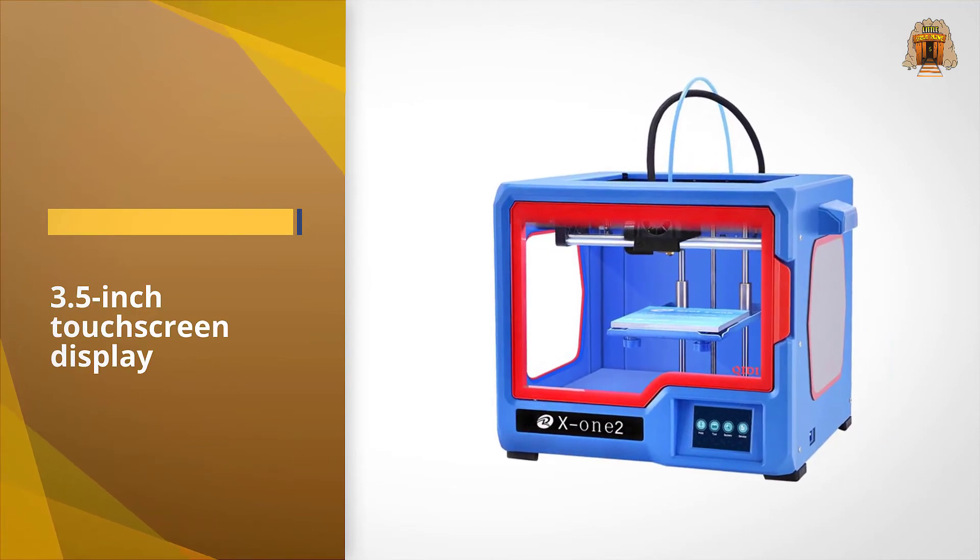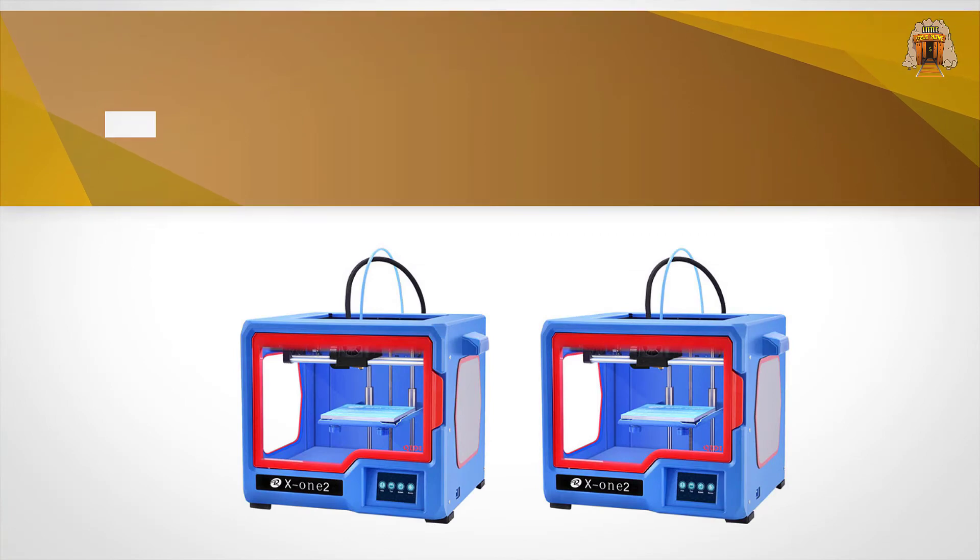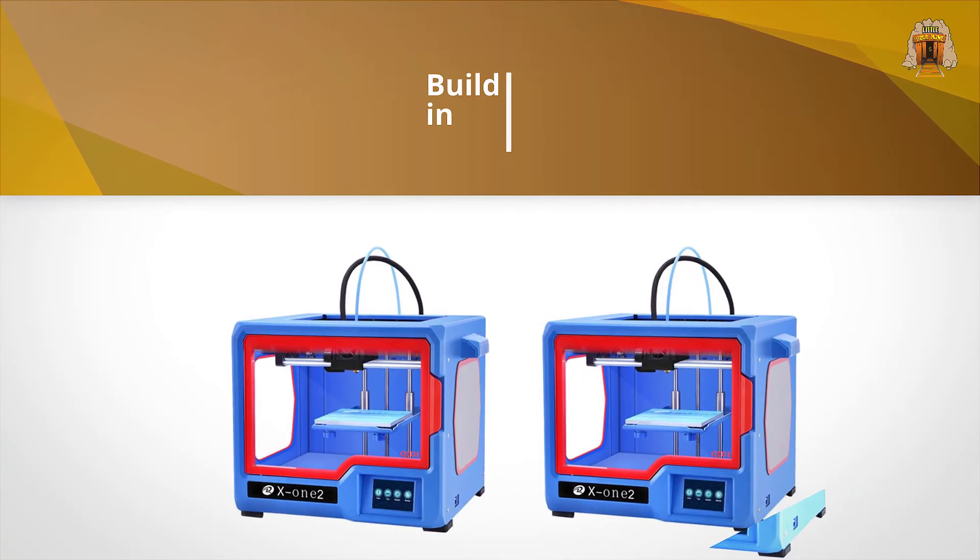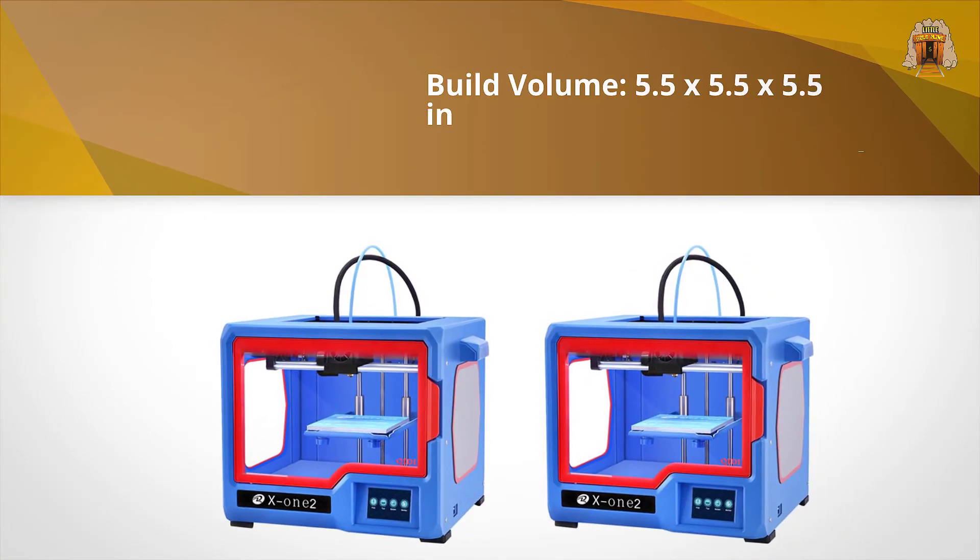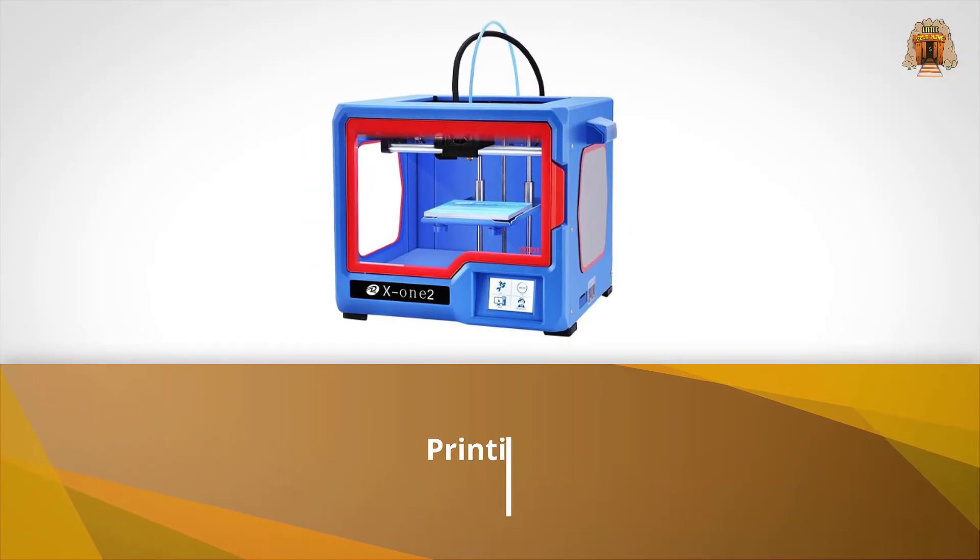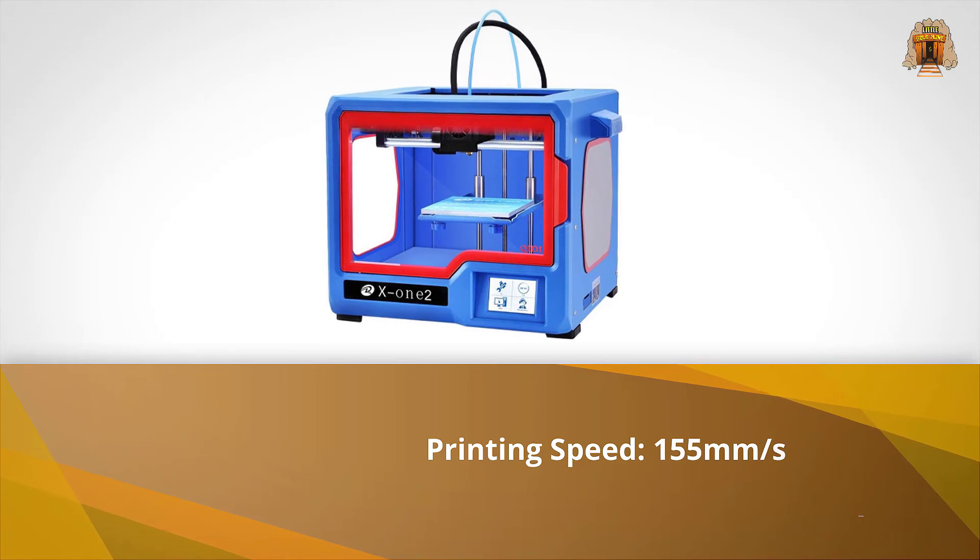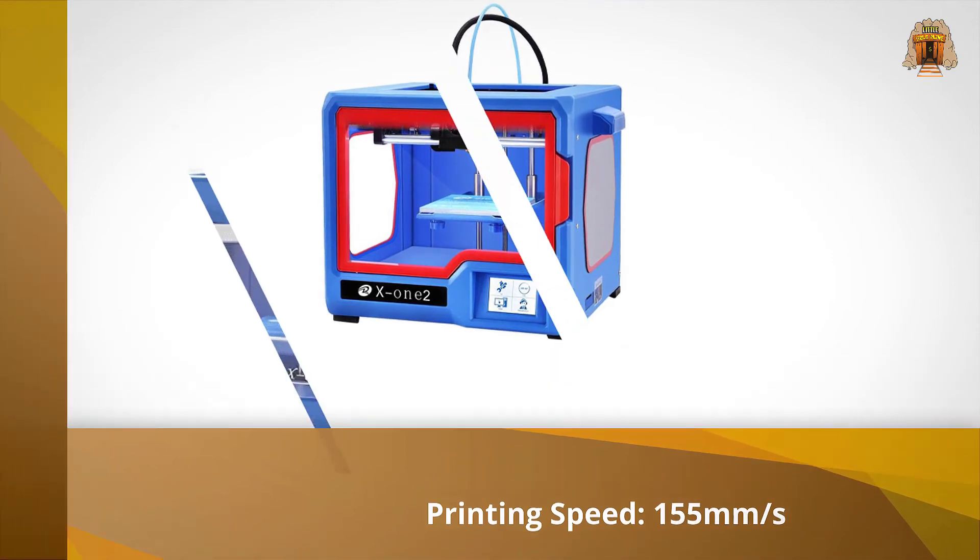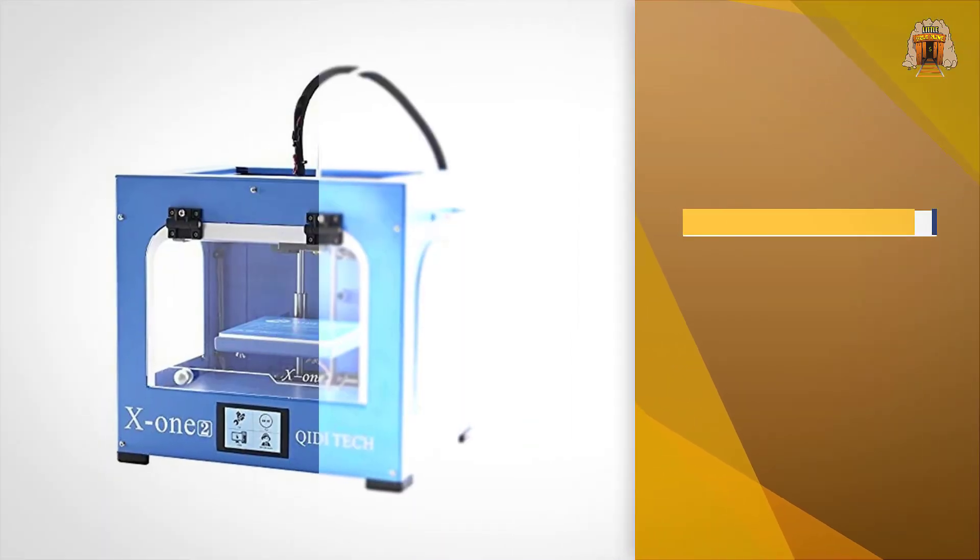Just follow the step-by-step instructions to begin your precision printing. The Qi Di Technology X1 Single Extruder 3D Printer has a compact build with an aluminum frame. The heated printing plate allows substantial build volumes and features a build tack.